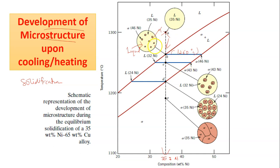If you want to know the composition of alpha at point B, you draw a tie line which crosses both the liquidus and solidus lines. The composition of alpha at this point is 46 weight percent nickel. As it cools further down, it moves to point C, where the alloy is located in the two-phase field L plus alpha.